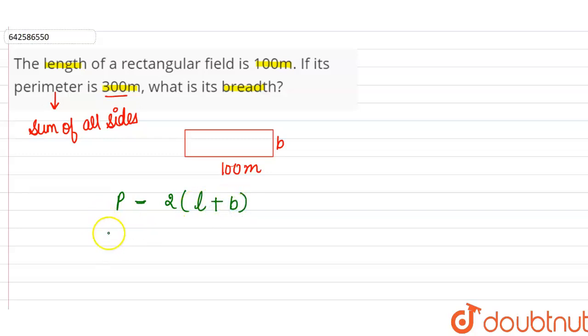So perimeter is given 300 meter. 300 meter is the perimeter of the rectangular field equals 2 into length is given 100 meter plus breadth.